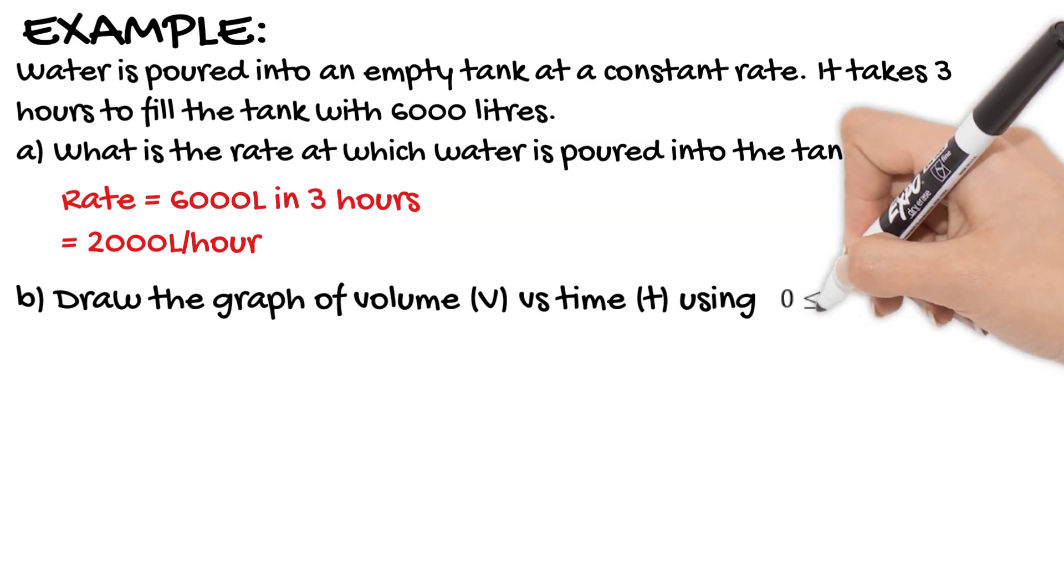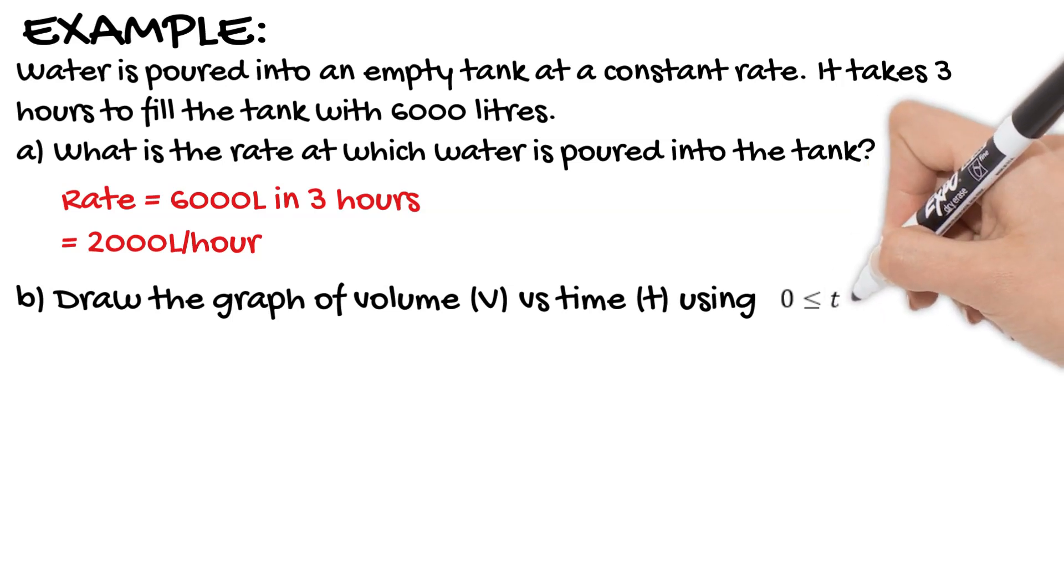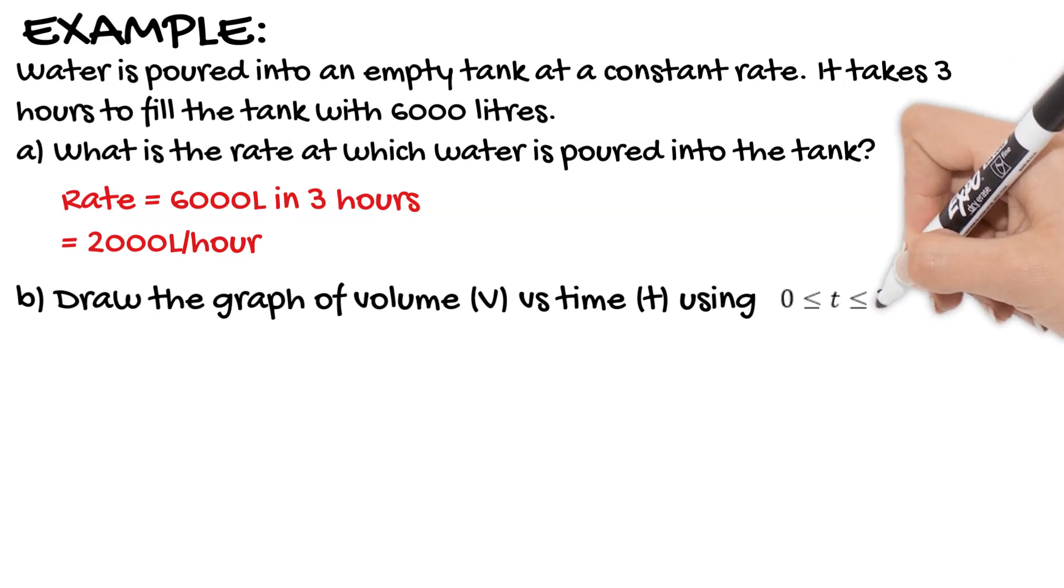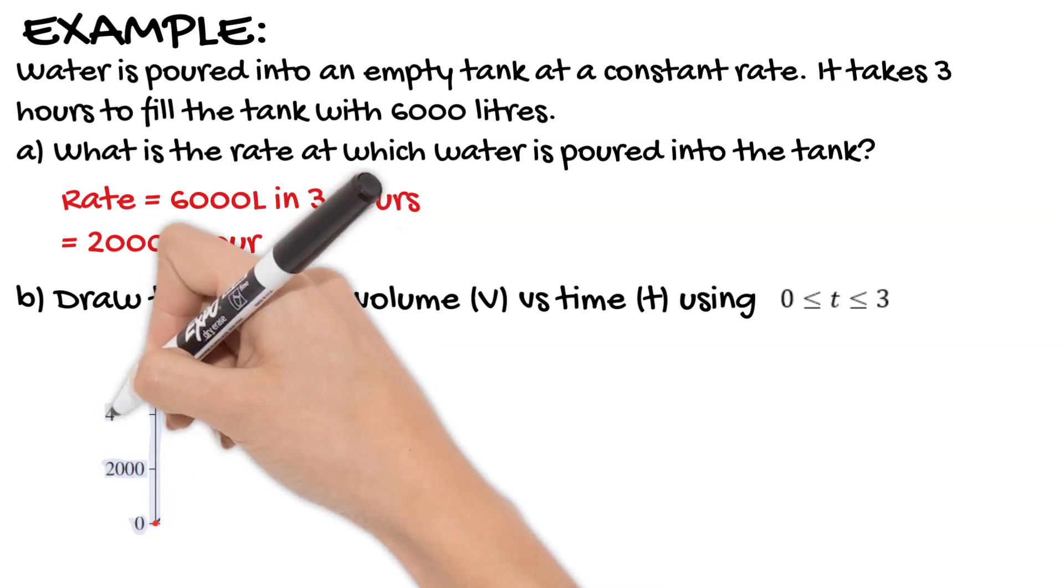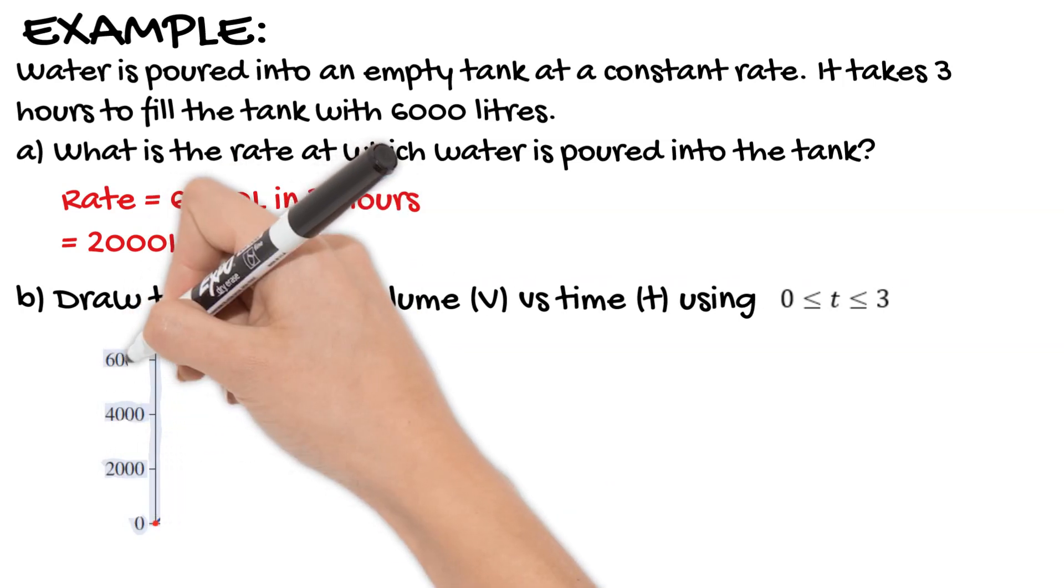So you know that in one hour the volume is 2,000 litres, and at three hours the volume is 6,000 litres. So it's quite actually easy to draw your graph because you know when time is zero the tank is empty, and at three hours the tank is 6,000 litres.